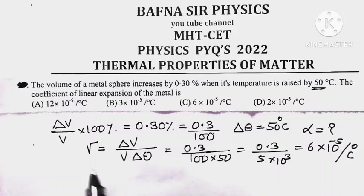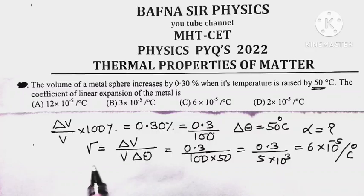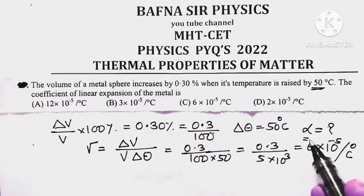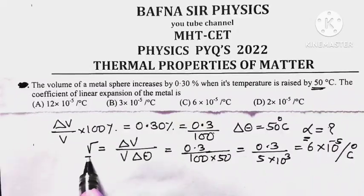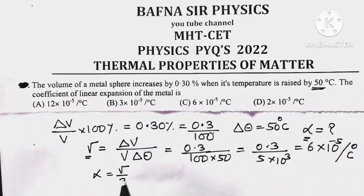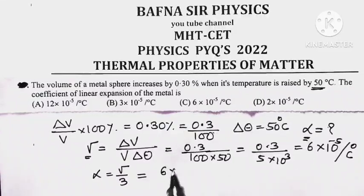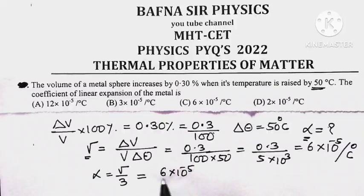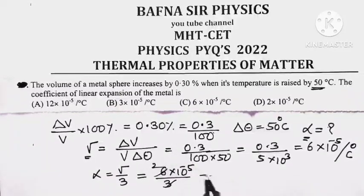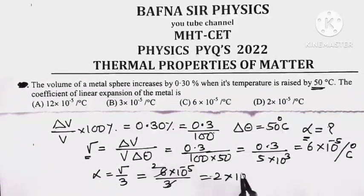This is the value of gamma, the coefficient of cubical expansion. But we want to find the coefficient of linear expansion. We know the relationship: alpha equals gamma by 3, or gamma equals 3 alpha. Gamma is 6 into 10 to the power minus 5, so alpha equals 6 into 10 to the power minus 5 upon 3, which gives 2 into 10 to the power minus 5 per degree Celsius.